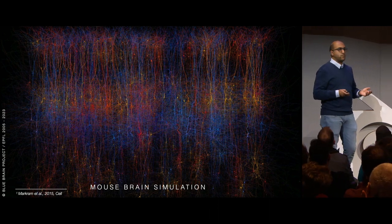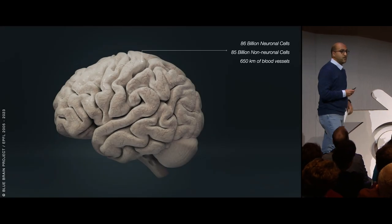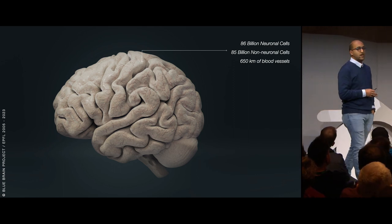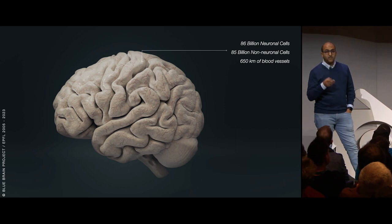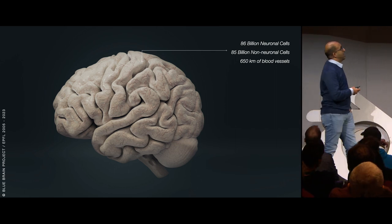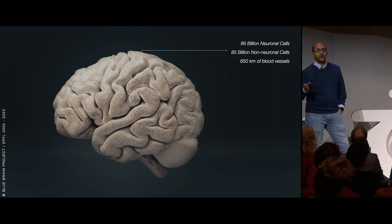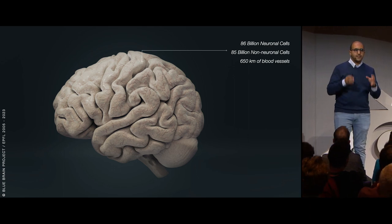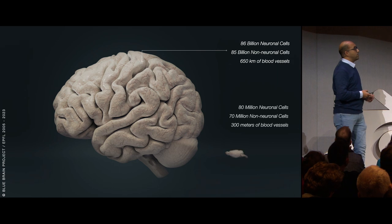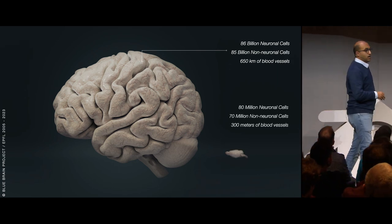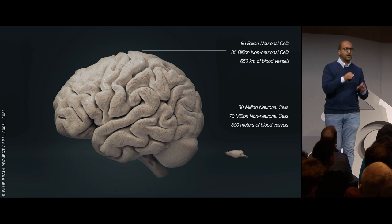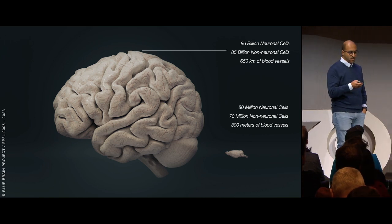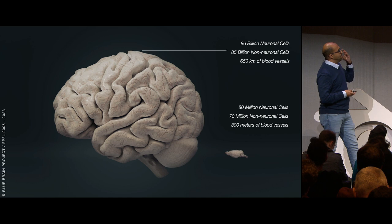Why didn't we just start with the human brain? Because it's very very complicated - it has around 85 to 86 billion neurons, around 85 billion non-neuronal cells, and 650 kilometers of blood vessels. So why not start with something that has a similar structure but is smaller in size? The mouse brain has around 80 million neurons, a similar figure for non-neuronal cells, and around 300 meters of vasculature.